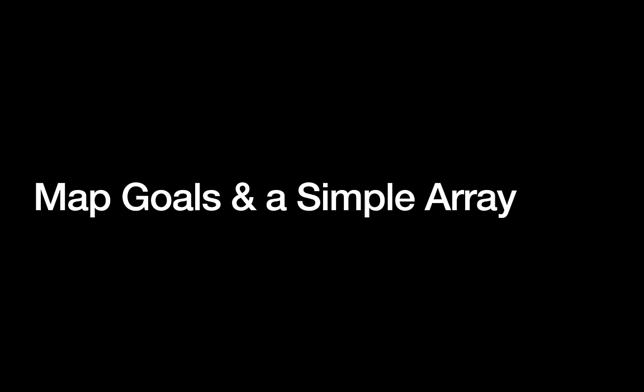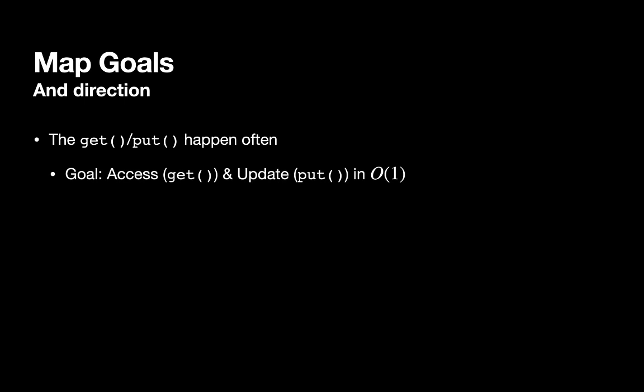Let's review some of the goals for our map data structures and we'll use a simple array to try and achieve those goals. The get and put operations are used to access data. They're the primary operations on maps and they happen often. So our goal is to get access and updates with the get and the put to happen in O(1) time. And remember put can be used to update data as well as to add new data to the data structure.